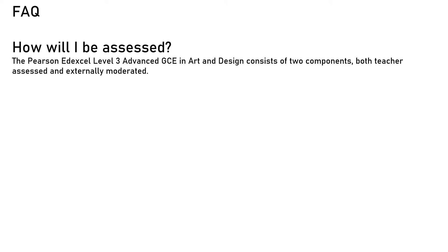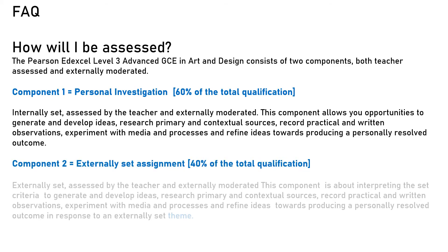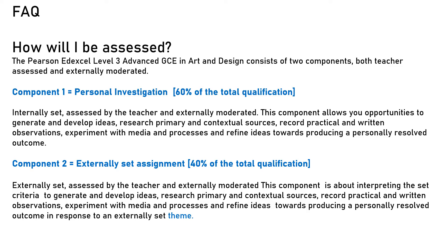A frequently asked question about this course is: how will I be assessed? You're assessed against two main components. Component one is the personal investigation — this is the sustainable design project I talked about previously. Component two is externally set, meaning the exam board releases their own title or theme and you have to interpret it and follow the same sort of process as component one, producing a range of research, design ideas, developing them until you reach a final proposal with various drawings and a final outcome. They are both very similar; component two is just a bit more condensed. And the most important thing: there is no written exam whatsoever.